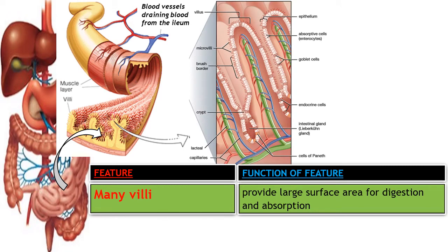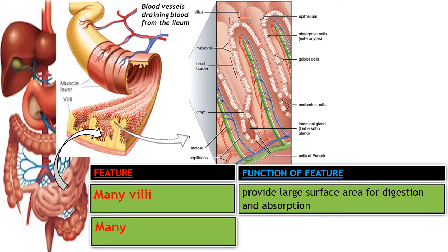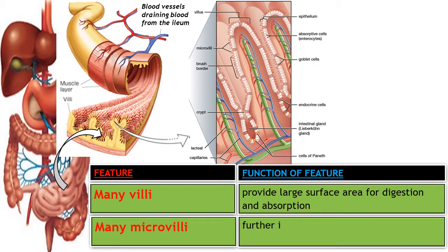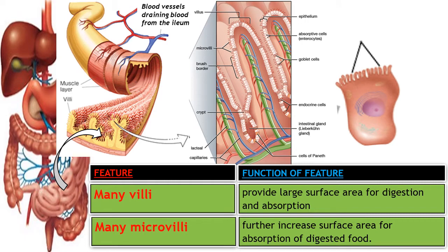Additionally, each villus in the ileum has numerous microvilli. Many microvilli are important because they further increase the surface area for absorption of the end products of digestion. A closer look at one epithelial cell shows the numerous microvilli, which are many because they must further increase the surface area for absorbing end products of digestion.